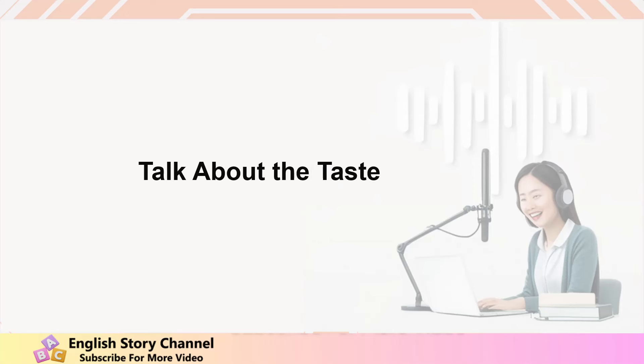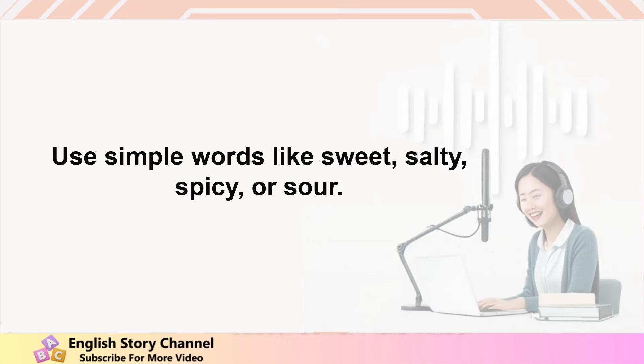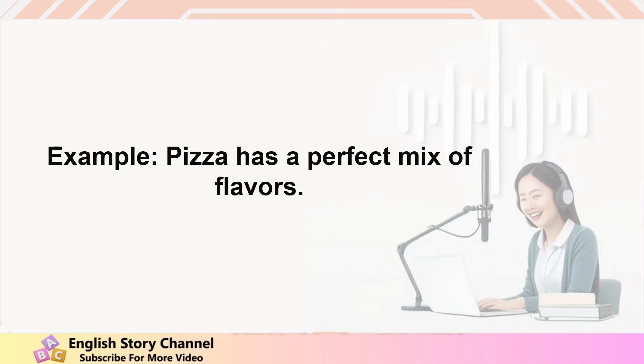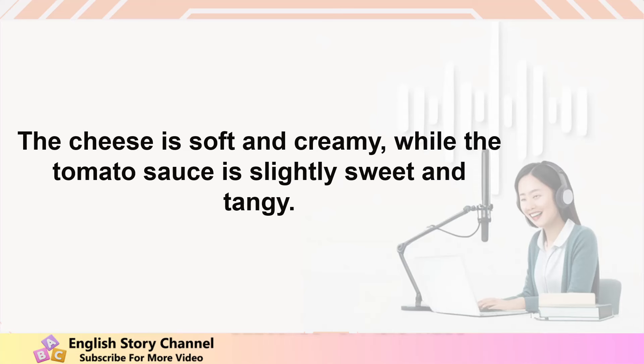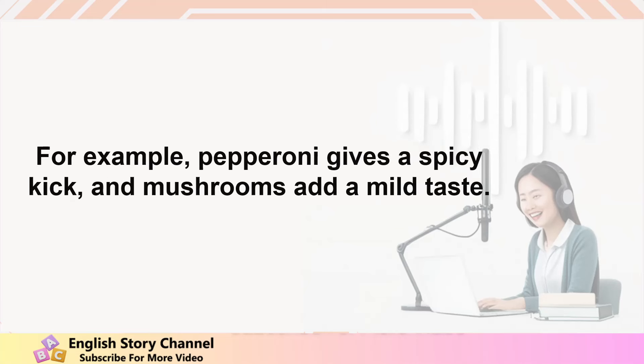Talk about the taste. Now describe how your favorite food tastes. Use simple words like sweet, salty, spicy, or sour. You can also explain how the different ingredients create a delicious flavor. Example: Pizza has a perfect mix of flavors. The cheese is soft and creamy, while the tomato sauce is slightly sweet and tangy. If there are vegetables or meat on the pizza, they add even more flavor. For example, pepperoni gives a spicy kick, and mushrooms add a mild taste.